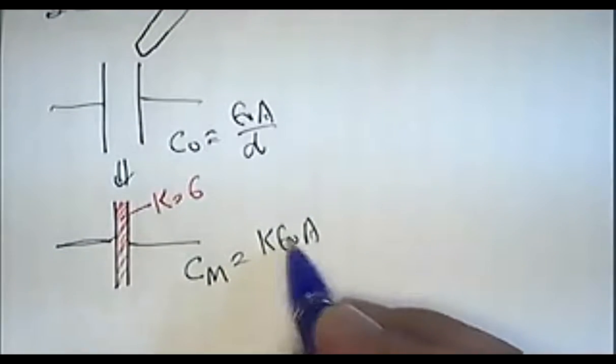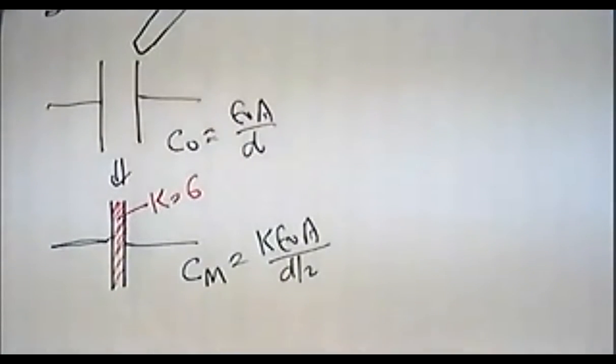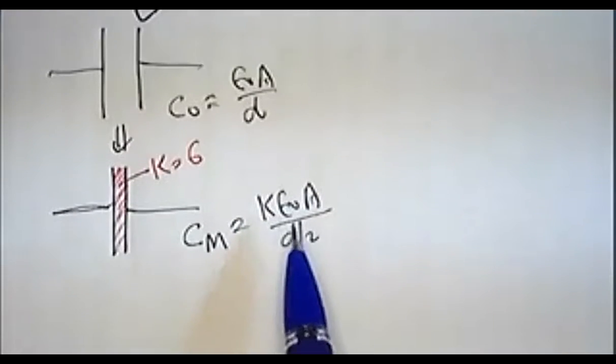Now, the new capacitance is K epsilon0 times a divided by d by 2. Because d by 2, this becomes epsilon0 a divided by d by 2.